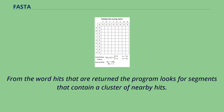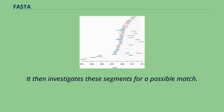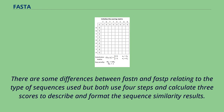From the word hits that are returned, the program looks for segments that contain a cluster of nearby hits. It then investigates these segments for a possible match. There are some differences between FASTA variants relating to the type of sequences used, but both use four steps and calculate three scores to describe and format the sequence similarity results.